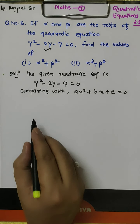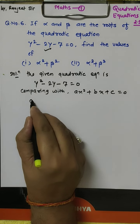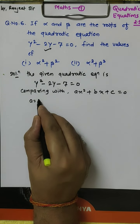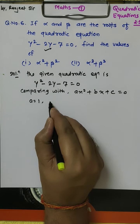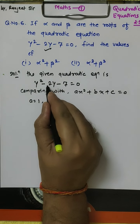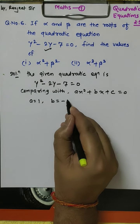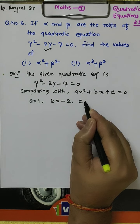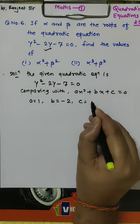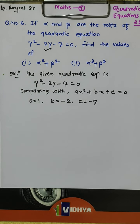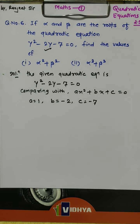Comparing, you will get: a is the coefficient of y squared, that is 1; b is the coefficient of y, that is minus 2; and c is the constant, which is minus 7. So a is equal to 1, b is equal to minus 2, and c is equal to minus 7.